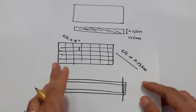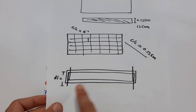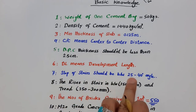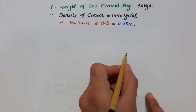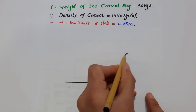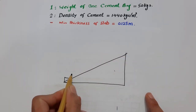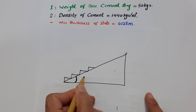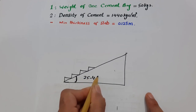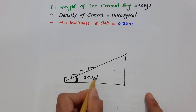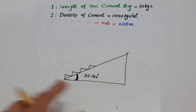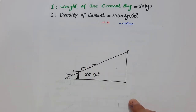Development length makes a good bond between steel and concrete and is provided at the ends. The seventh one is that the slope of stairs should be between 25 to 40 degrees. As you can see, this angle at the stairs should not exceed 40 degrees, otherwise people will face problems when using them.